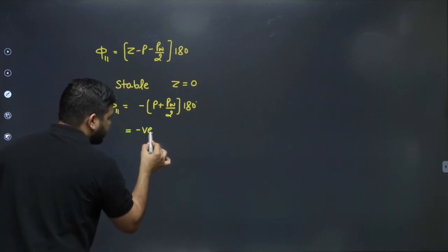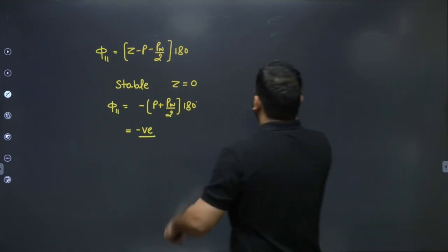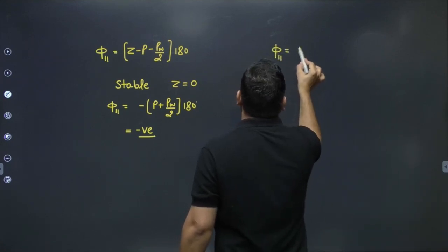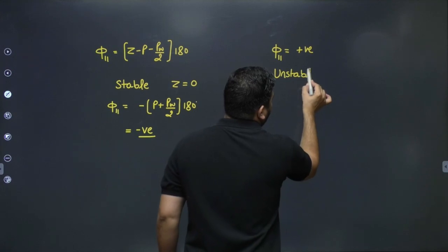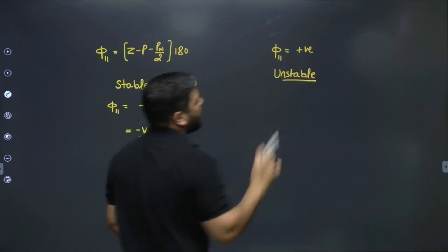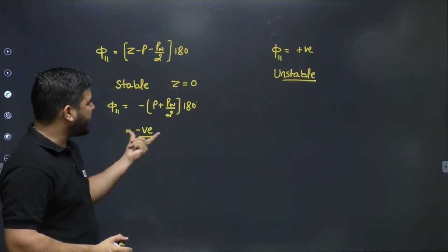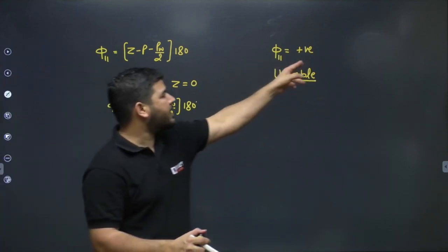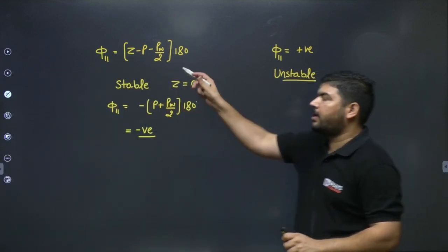So if 511 comes out to be positive, you can directly say the system is unstable. If 511 comes out to be negative, then the system may be stable — you have to check further. But if 511 is positive, the system is definitely unstable.